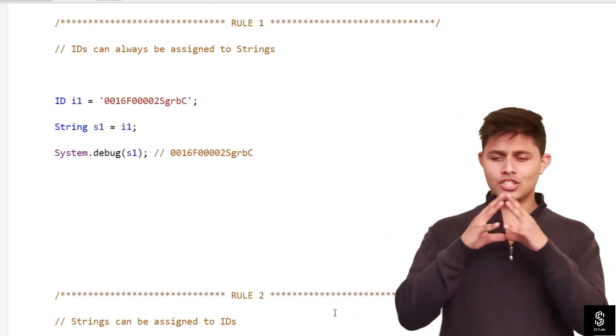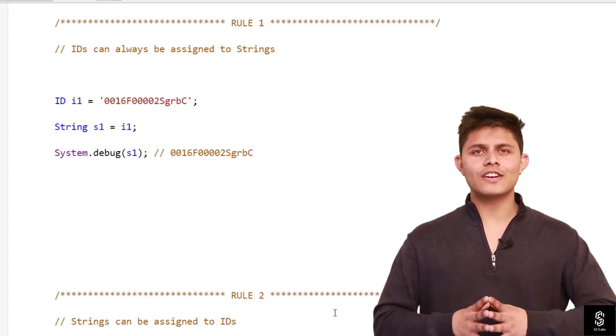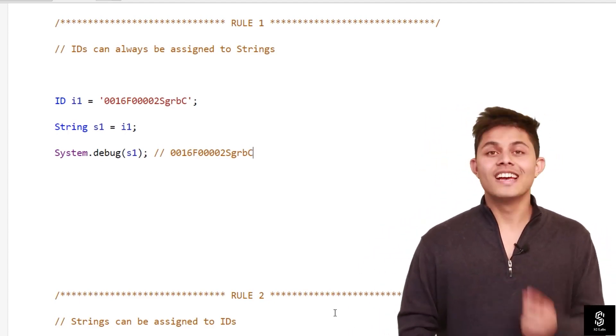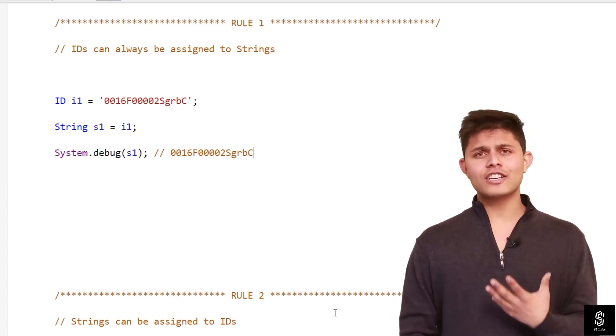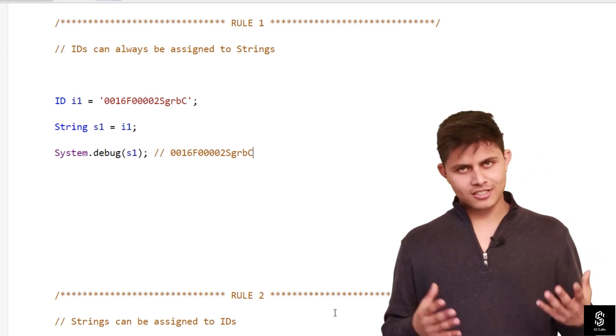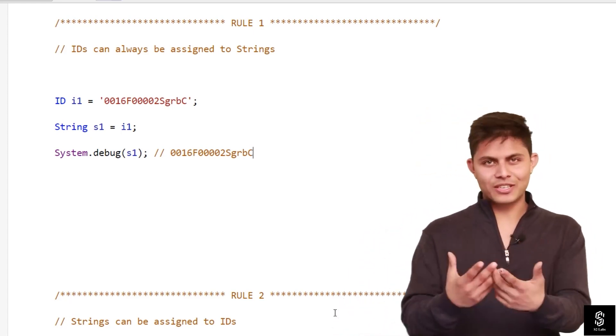Now without wasting any further time, let's jump to the rules that we have with rules of conversion. The number one rule is ID can always be assigned to Strings, and we all know that. What's new in that? But still, it is required for me to explain it to you.